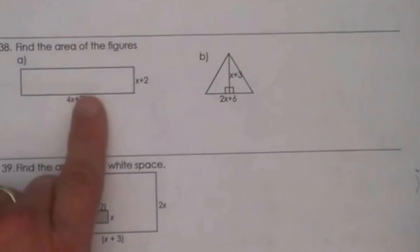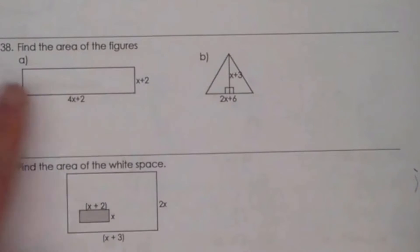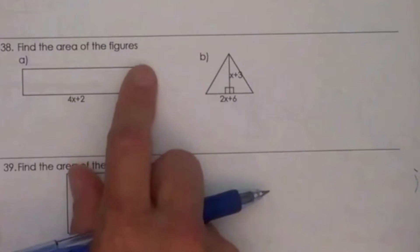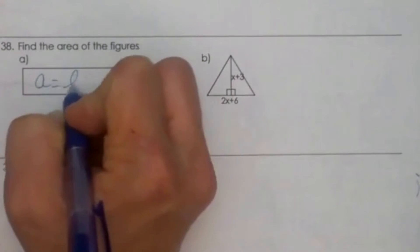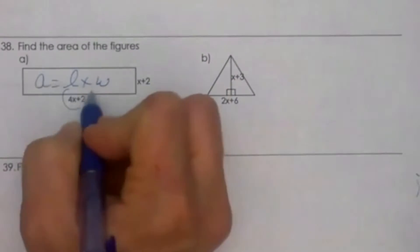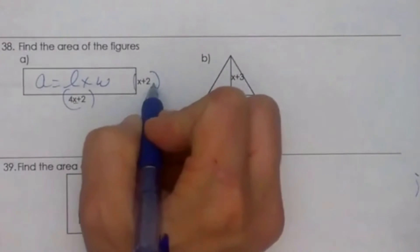Finding the area of a rectangle or a triangle given polynomial expressions for the sides. We're trying to find the area of a rectangle. We know the area of a rectangle equals length times width. All we're going to do is multiply these two together to get the area.